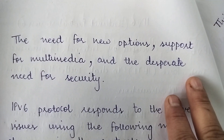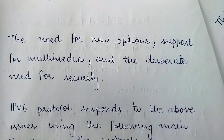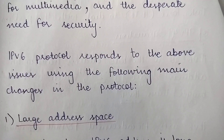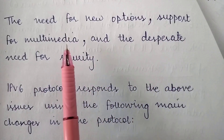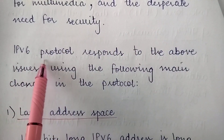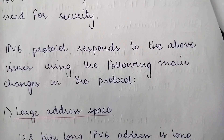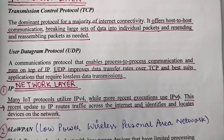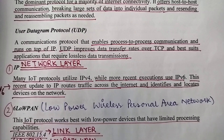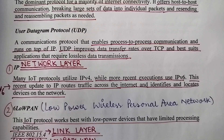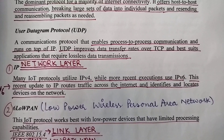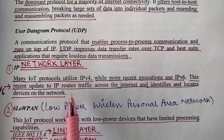The need for new options, support for multimedia, and the desperate need for security all led to the advent of IP version 6. The IP version 6 protocol addresses all of these issues — the address space required, new options like multimedia support. So IP version 4 and IP version 6 are both used in the network layer for IoT. If you want to study them in detail, I will give links in the description box for detailed videos on both, where you can also see the header format for both protocols.